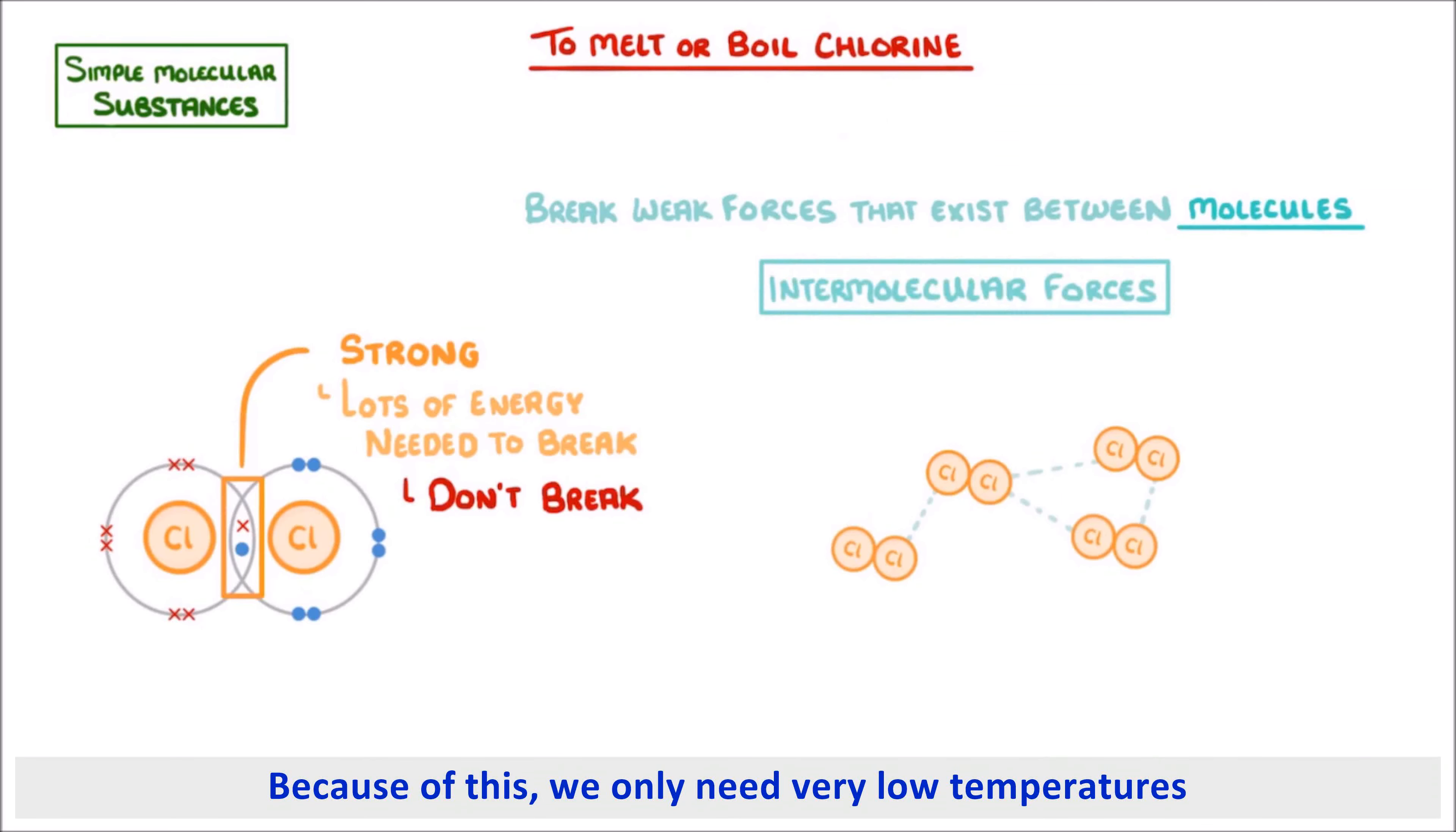Because of this, we only need very low temperatures to melt or boil simple molecular substances. For example, chlorine boils at minus 34 degrees Celsius.